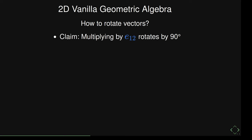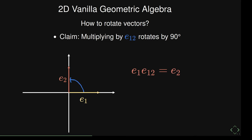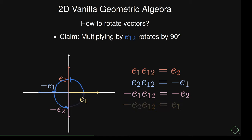My claim is that if you multiply a vector by the bivector E12, it will rotate the vector by 90 degrees. If we start with vector E1 and multiply by E12, we get E2 — indeed a 90-degree rotation. Continuing: multiplying again gives −E1, then −E2, then back to E1. So multiplying by E12 does indeed rotate by 90 degrees.